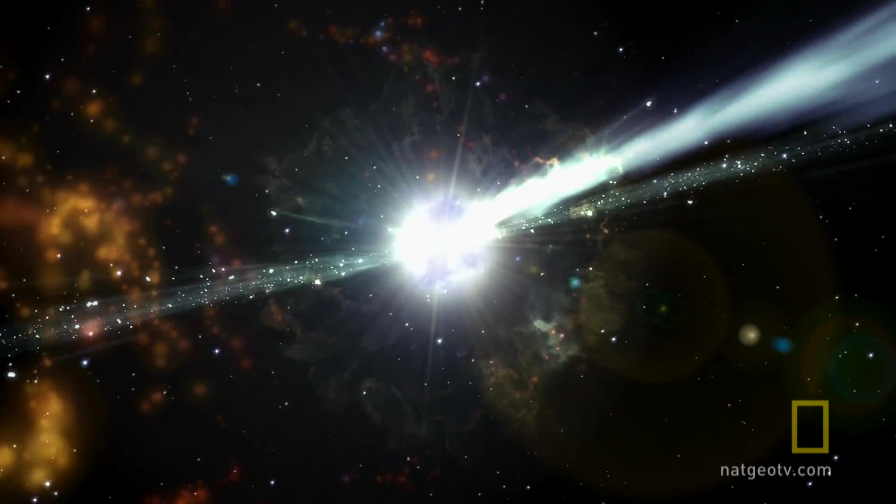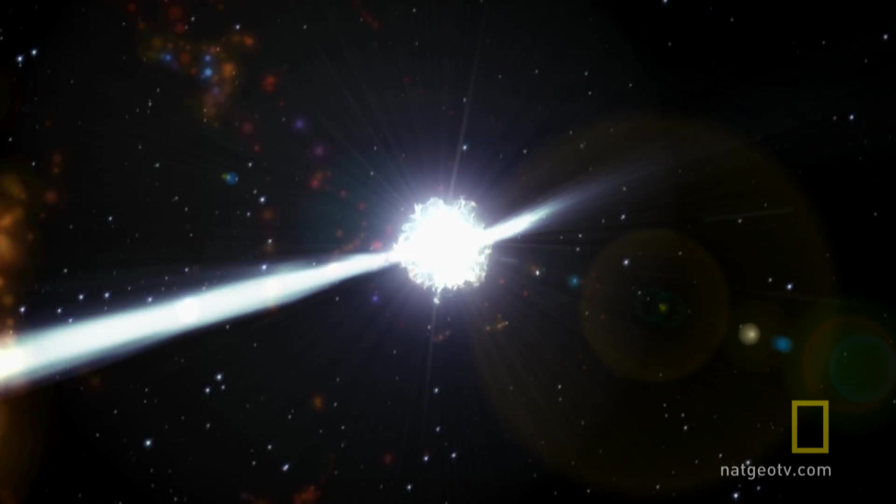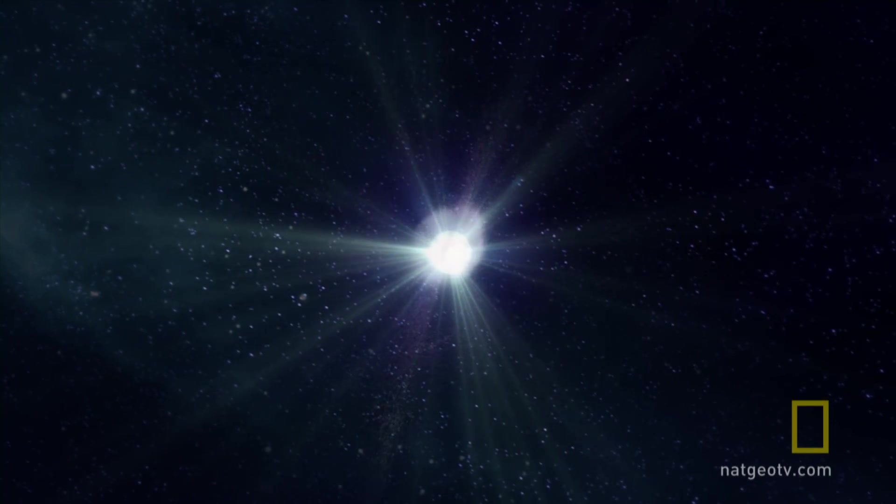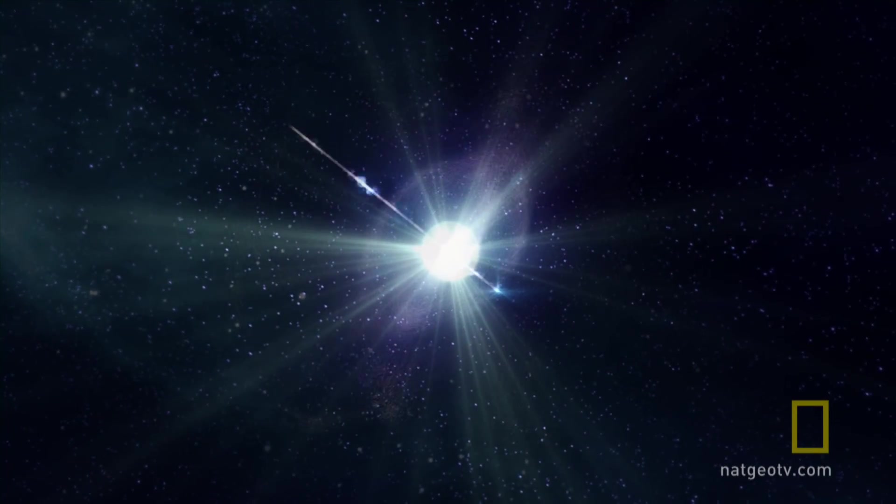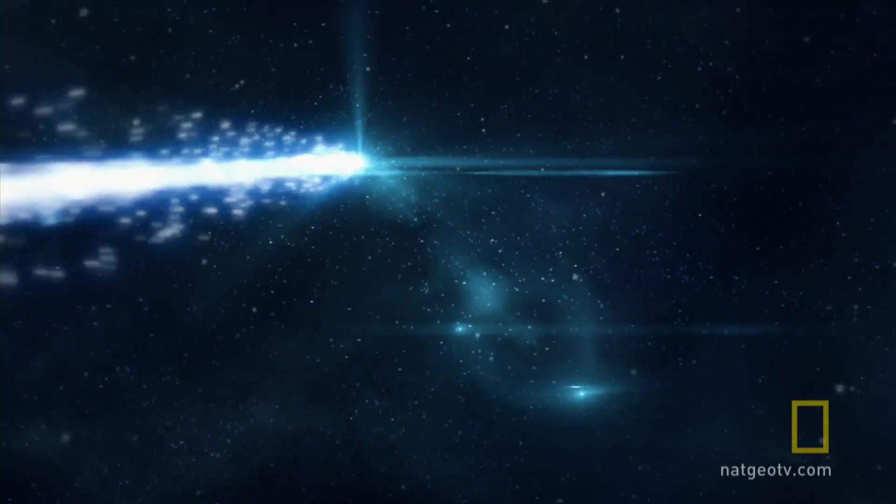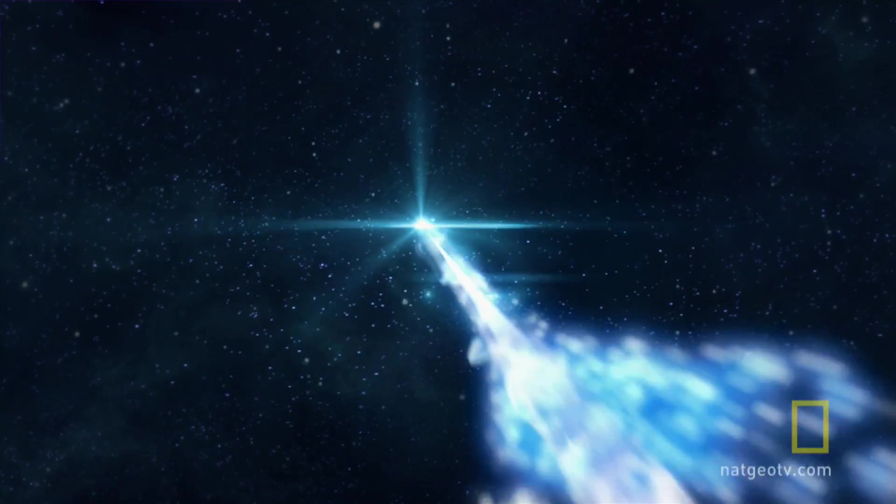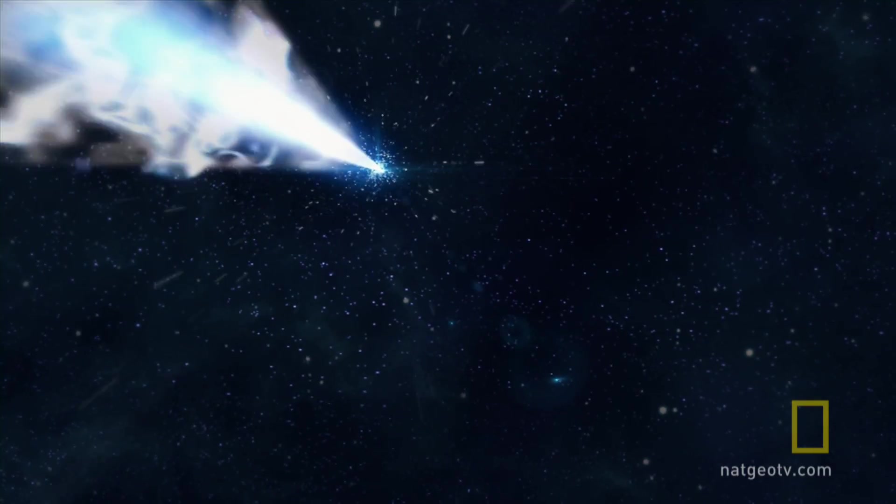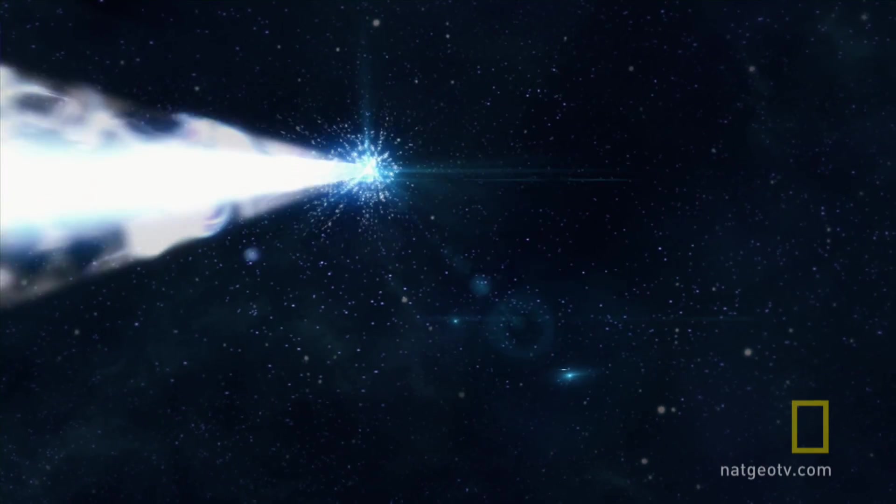Light and energy from Eta Carinae takes 8,000 years to reach Earth. So if this star has already gone supernova, it could be sending high-energy radiation called gamma rays right at us. If this burst hits Earth, it could wipe out up to half of the ozone layer.